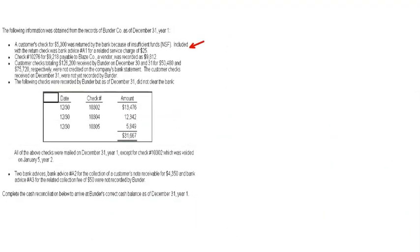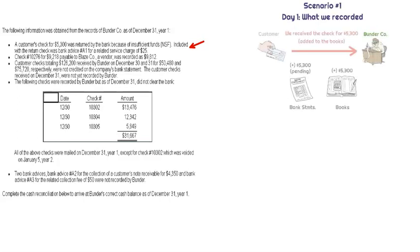Transaction number one: a customer's check for $5,300 was returned by the bank because of insufficient funds — this is an NSF check. Included with this is a bank advice stating there's a service charge of $25. We received this check from our customer and deposited it, but the customer didn't have any money to pay us. The check bounced, and on top of that, we're getting hit with a $25 service charge.